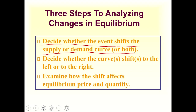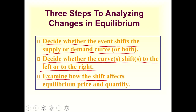Once you decide which curve shifts, you move to step two: decide whether the curve shifts to the left or to the right. Once you know the direction, you shift the curve. Step three: you now have a new equilibrium — just identify what the new equilibrium price level and quantity are. It's simple.